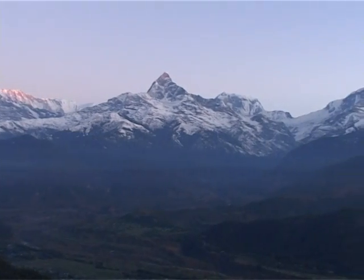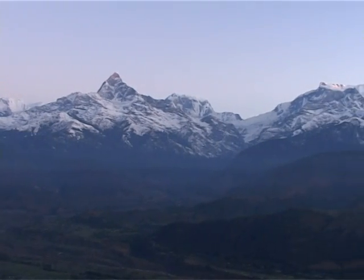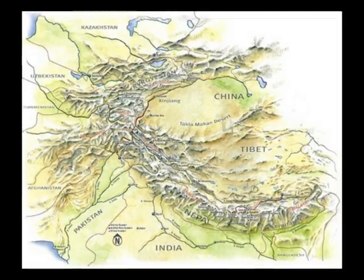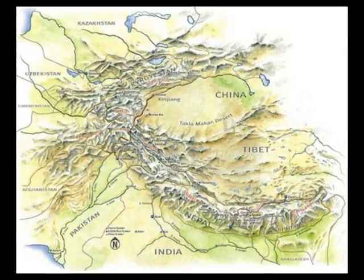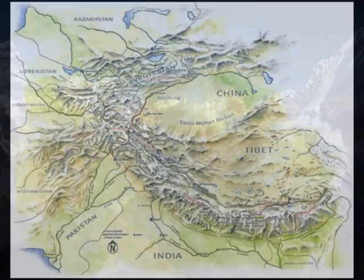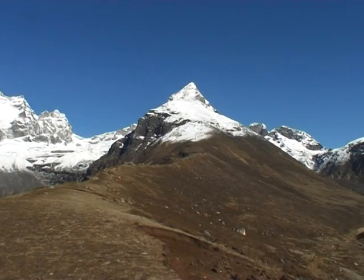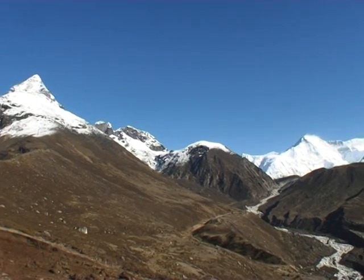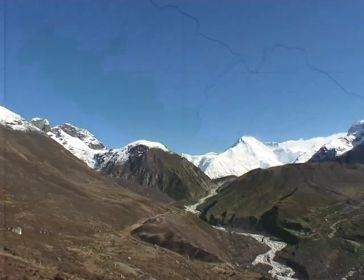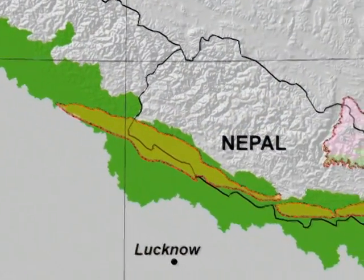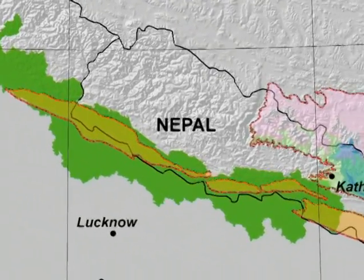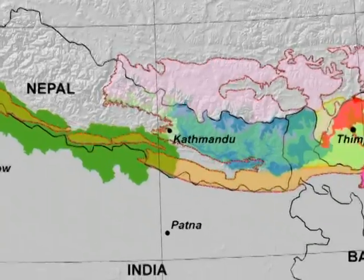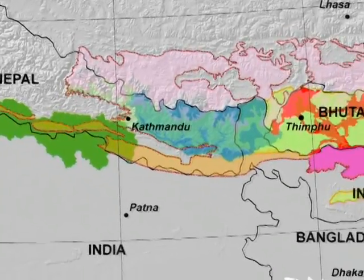The Himalaya is the arc-shaped mountain range in between the Indus River in the northwest and the Brahmaputra River in the east. It covers an area of approximately 750,000 square kilometers in South Asia. It extends from Pakistan to northern India and to Nepal and finally ends in Myanmar through Bhutan.